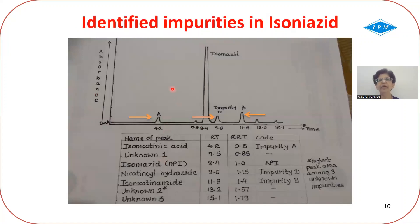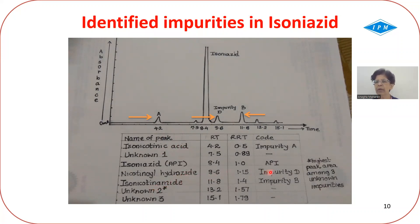Here is the HPLC chromatogram of isoniazid showing peaks A, D, and B. The main peak is isoniazid. Impurity A is isonicotinic acid, impurity D is nicotinoid hydrazide, and impurity B is isonicotinamide. The relative retention times are 0.5, 1.15, and 1.4 respectively — they elute at consistent relative retention times.